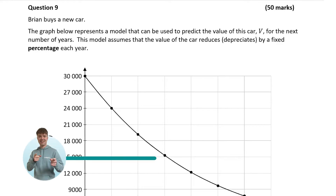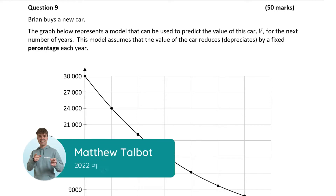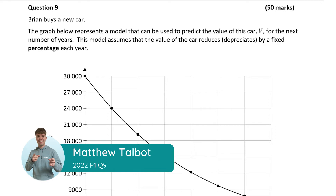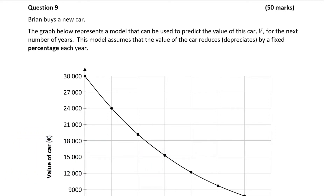Hello, it's Matthew here and we're going to look at question 9 which is worth 50 marks. We're shown a graph that represents a model used to predict the value of Brian's new car. It assumes that the value of the car depreciates by a fixed percent every year, meaning the value reduces by the same percentage every single year.